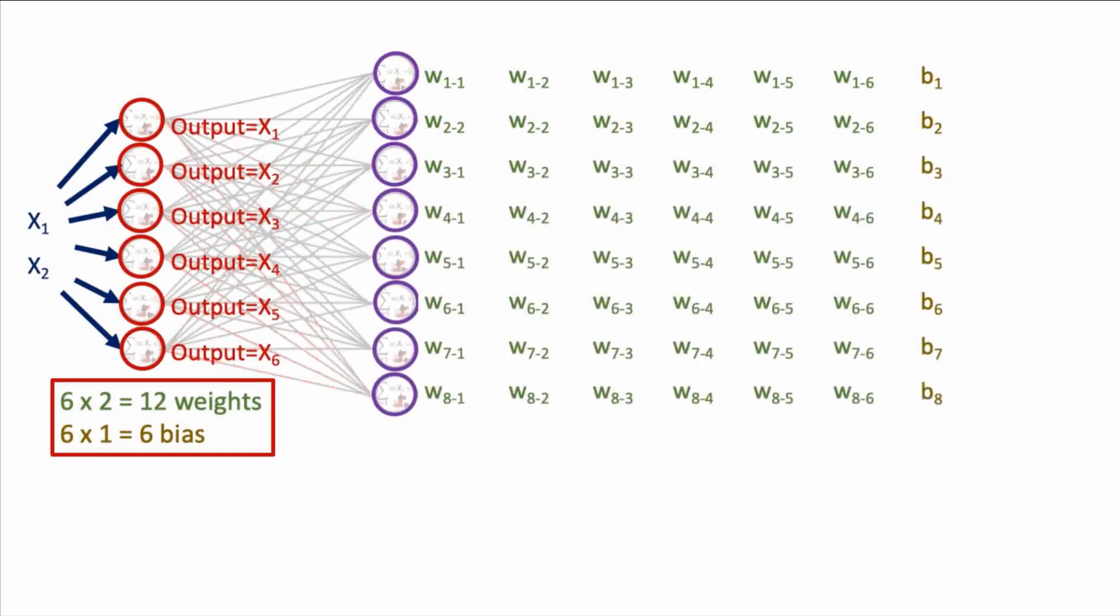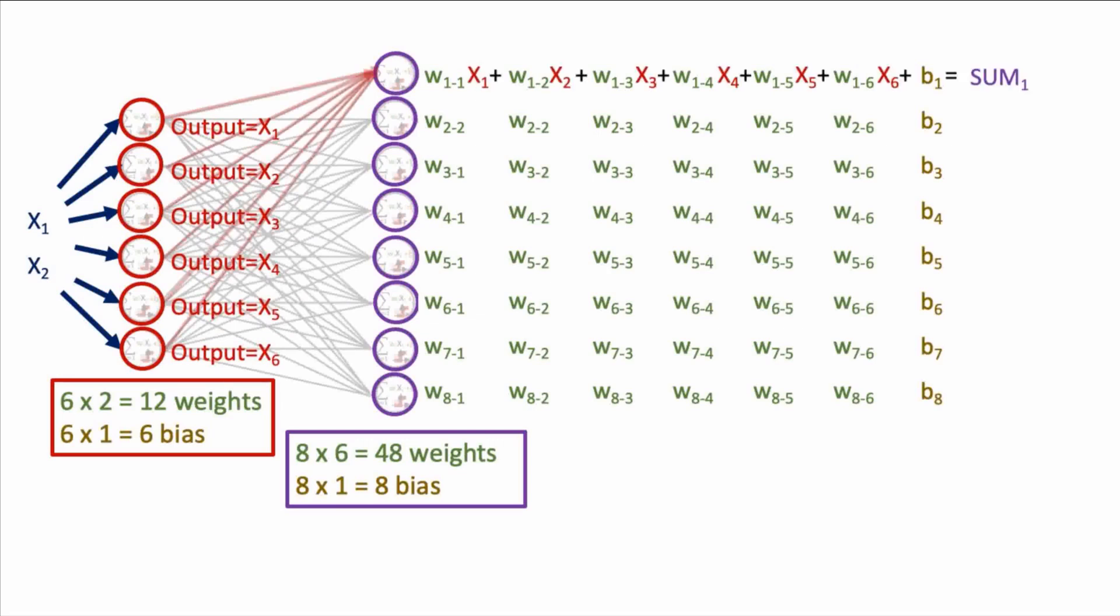Which means in total, this layer has 48 unique weight values and eight unique bias values. Now again, each neuron needs to perform its computation, which is to take the weighted sum of its inputs, add the bias, and pass this through an activation function to produce an output.